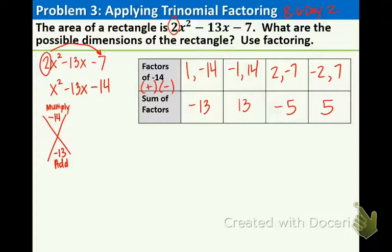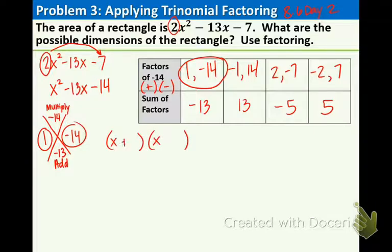The number we were looking for was adding to negative 13, so we actually found it in the first pair. Take those two numbers and put them in the blank spaces in the x, circle those numbers, and now we're going to rewrite them in factored form using the x in front, plus 1 minus 14.